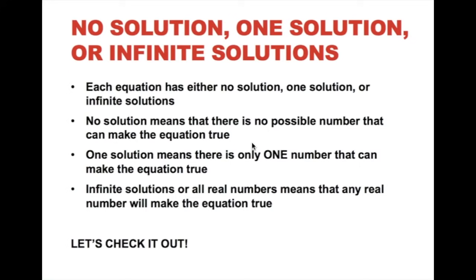Hello, everybody. Today we're going to be looking at no solution, one solution, and infinite solution algebra problems. What this means is that when you solve the problem, you can either have no solution — no number that's going to make both sides of the equation true — only one solution that will make it equal on both sides, or infinite solutions, which means you can put in any number and it will make it equal on both sides.